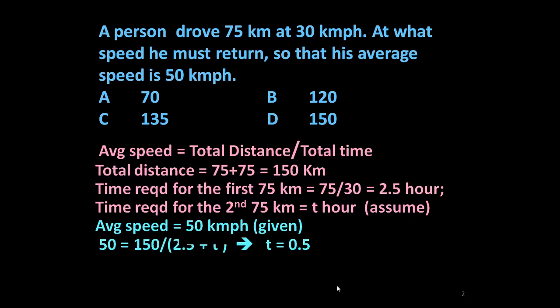Average speed is given as 50 km per hour. Using the formula average speed equals total distance upon total time, we have 50 equals 150 divided by (2.5 plus T).